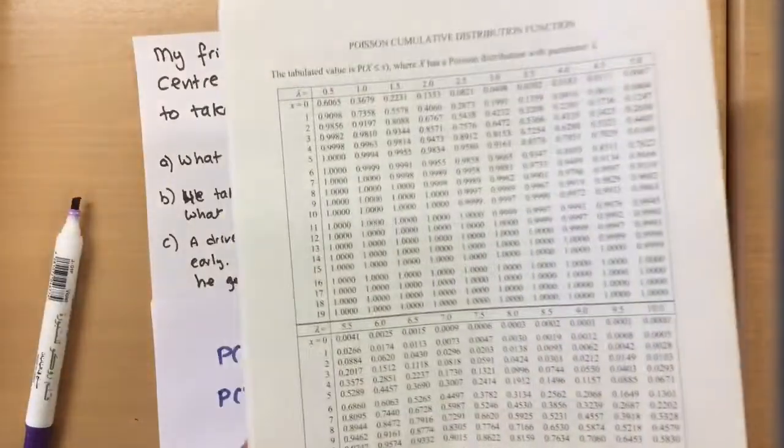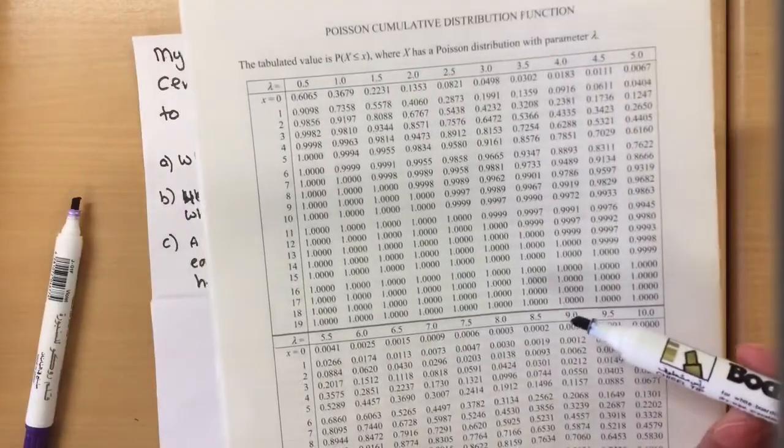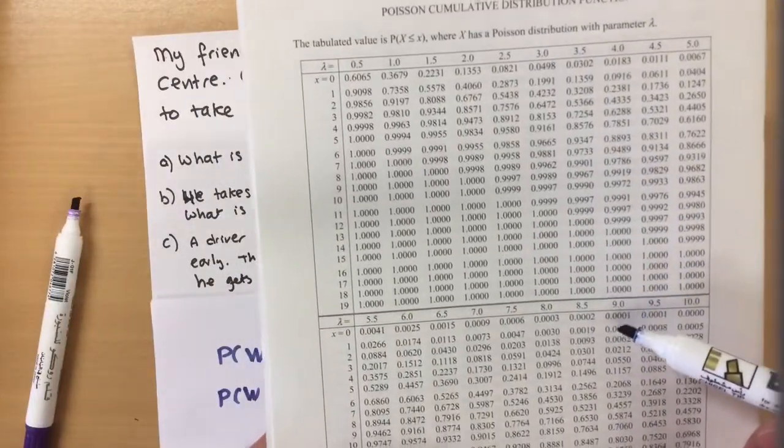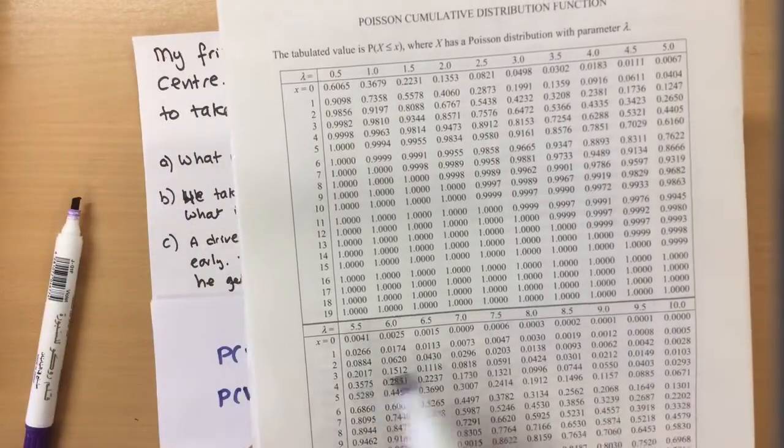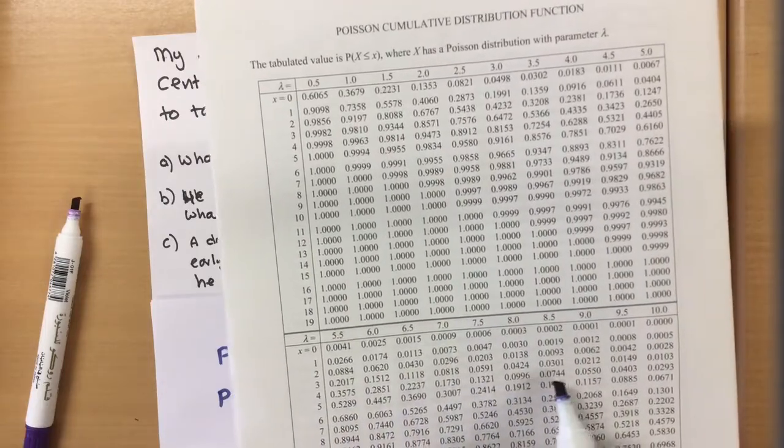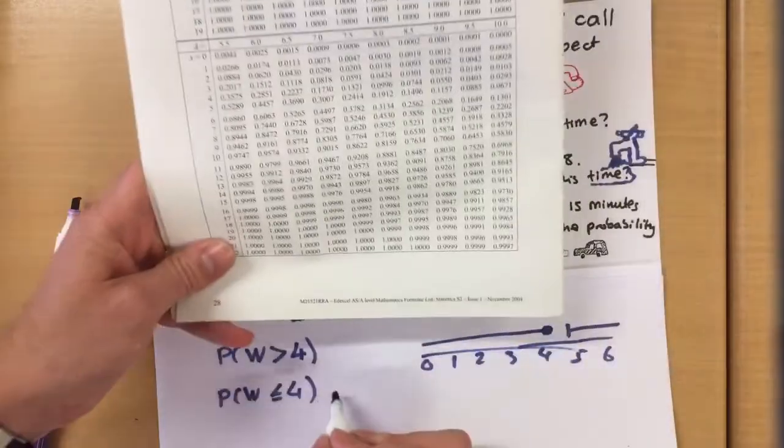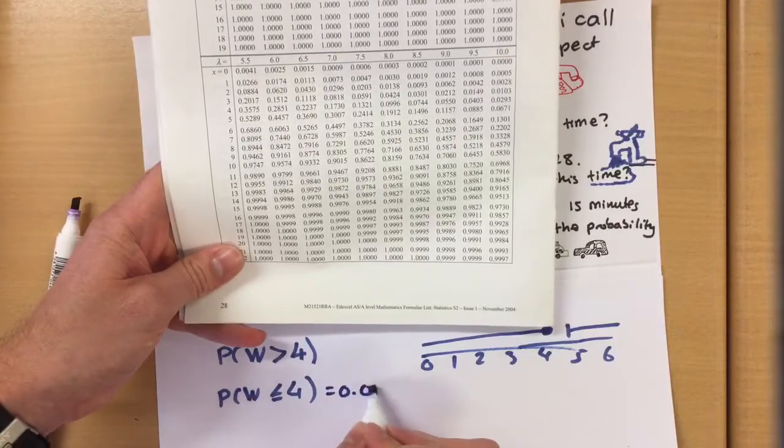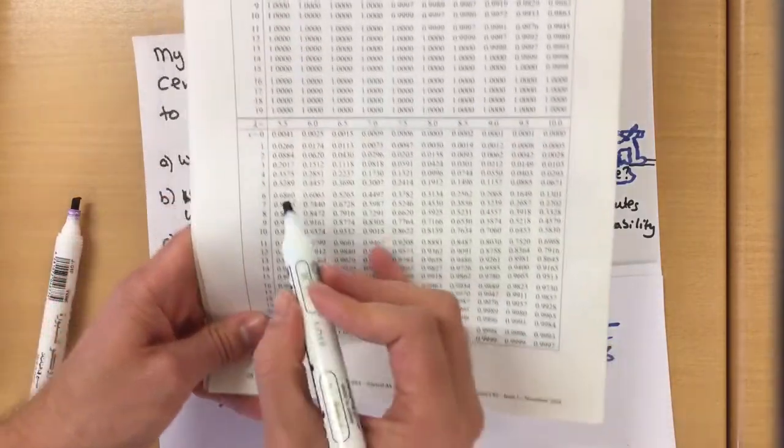And as luck would have it, nine is also in our table. So chance of getting four or less, so four is over here, so 0.0550.